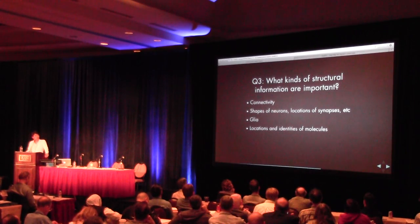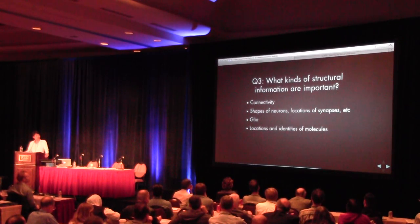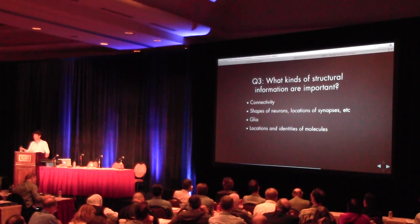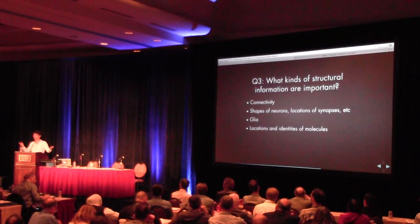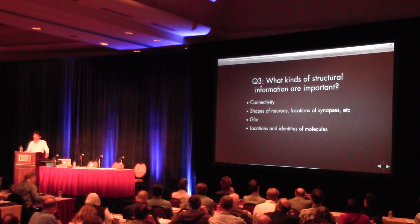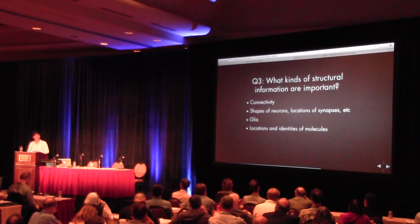What kinds of structural information are important? Most neuroscientists agree that the connectional structure of the brain is really important. To go even further, it's not just whether neurons are connected, but the shapes of neurons, the locations of synapses — the exact location of a synapse on a neuron might be really important. We also haven't mentioned glia — lots of cells inside the brain that are not neuronal. Glia are like the crew of the show; neurons are like the cast. Glia are very important for brain function, so maybe we have to preserve glial structure too. And finally, the locations and identities of molecules need to be mapped to verify they are all preserved.